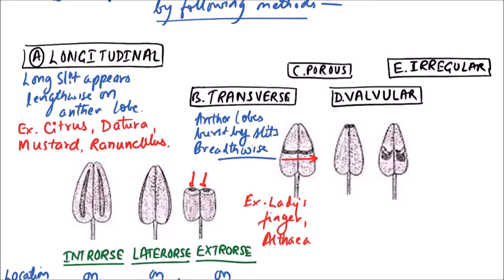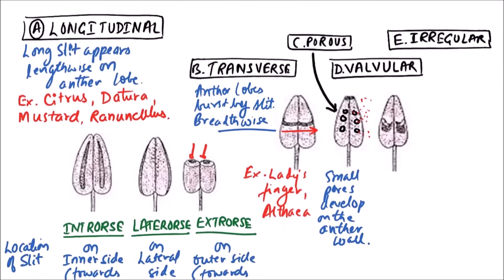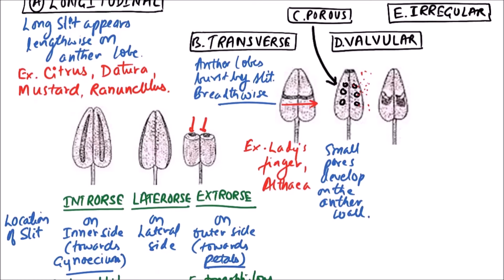The next type is porous dehiscence. In this type, small pores develop on the anther from which the pollen grains are shed. The examples include Solanum, tomato, and cassia.